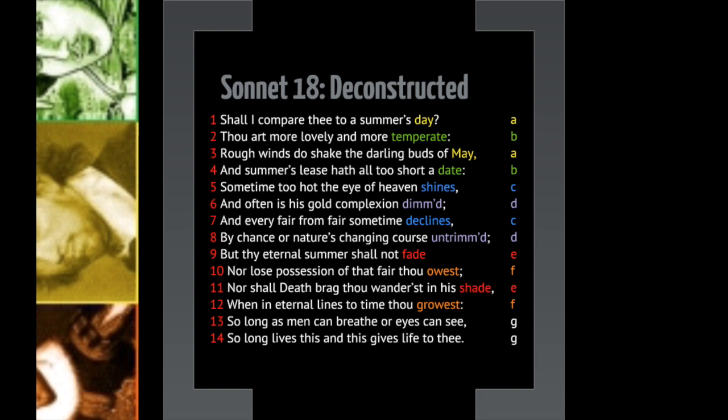'Rough winds do shake the darling buds of May' — the problem with spring, especially here in Idaho, is that May is super windy, so the beautiful little flowers get shaken around. Line four: 'And summer's lease hath all too short a date' — summer is way too short. You know this from vacation: just as you're starting to relax, it's time to go back to school.